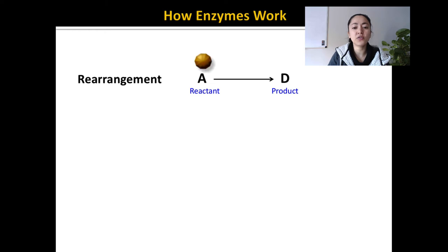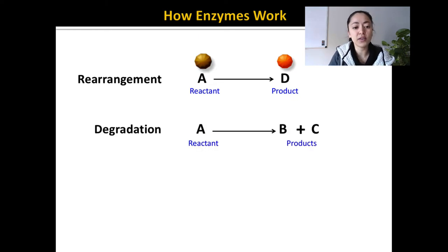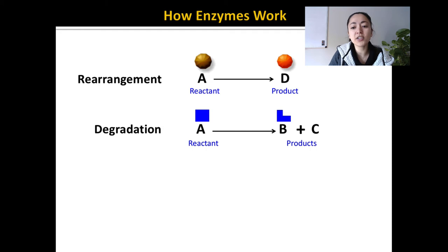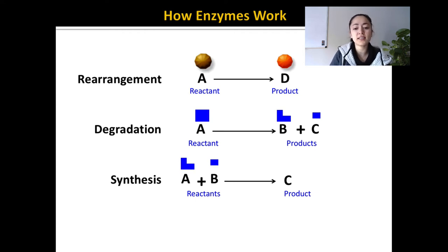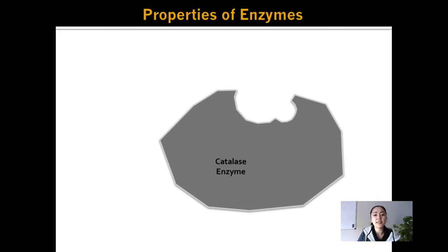Enzymes can rearrange molecules — you can start with one reactant and it can just turn into something new that comes out, simply by changing the arrangement of atoms. They can also degrade molecules: starting with one large molecule, the enzyme breaks it down into two smaller molecules — that's like what happens in the breakdown of hydrogen peroxide. Enzymes can also be important in the synthesis of molecules, where two smaller reactants come together to create a new, larger product.